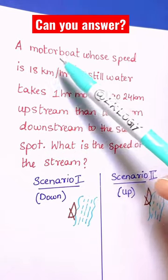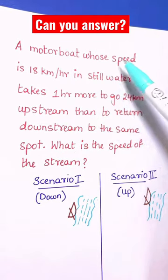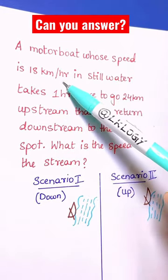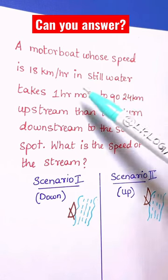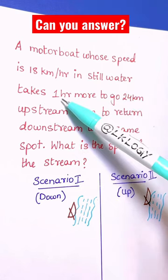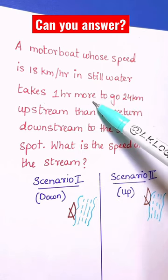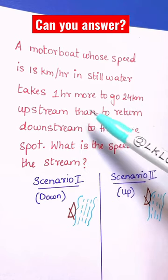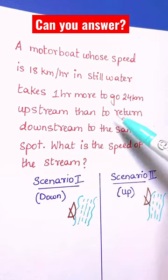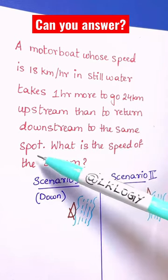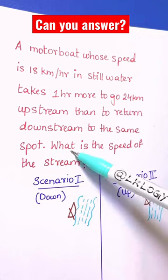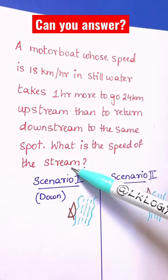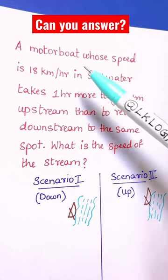A motorboat whose speed is 18 kilometers per hour in still water takes one hour more to go 24 kilometers upstream than to return downstream to the same spot. What is the speed of the stream?